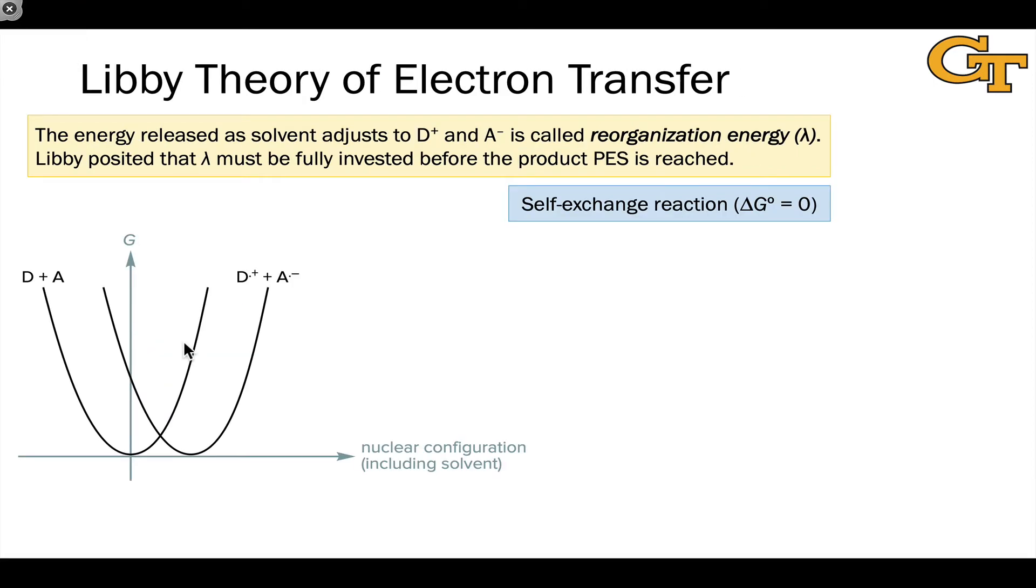We're going to start with the Libby theory and think about electron transfer in terms of potential energy surfaces. We have a reactant potential energy surface for D and A molecules and a product surface for D dot plus and A dot minus.